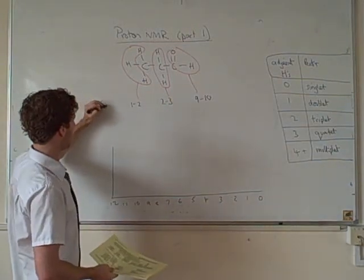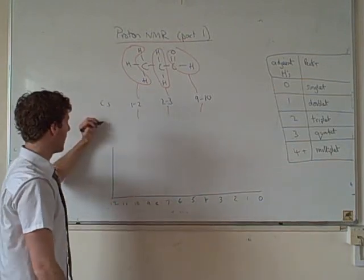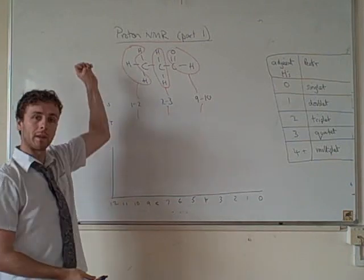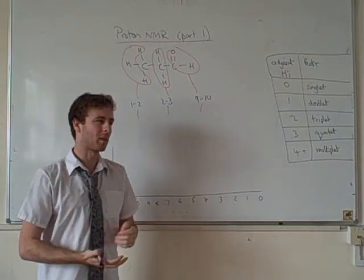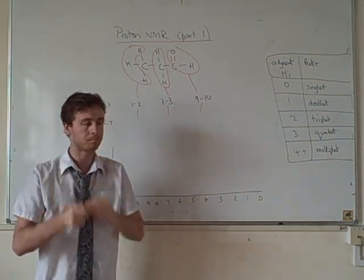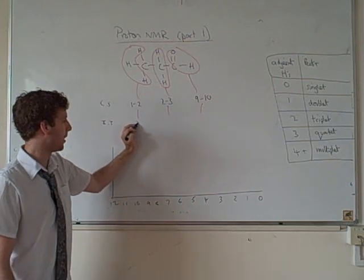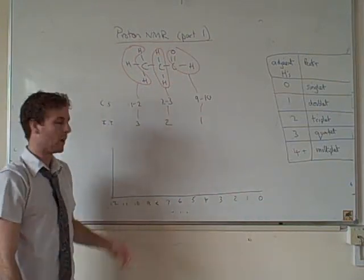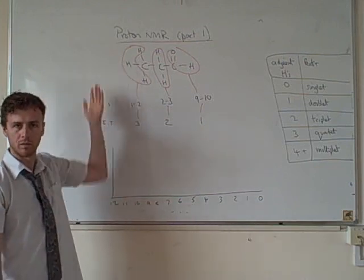I've looked at my chemical shifts. The next thing we need to think about is the integration trace — sometimes called relative peak areas. The more hydrogens you have in an environment, the larger the area under your peak is going to be. Sometimes people incorrectly say the peak will be bigger — it won't be bigger, only the area underneath it will be larger. This environment has three hydrogens, so it has a relative peak area of three; the next has two, and the last has one. As long as you can count, you can figure out the integration trace.